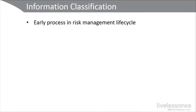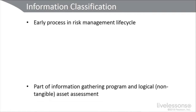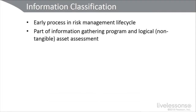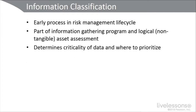In the early process of this lifecycle, we're going to make sure that we have information classification. We are classifying the data and the assets of the organization. It's part of our information gathering — that early phase, regardless of the lifecycle that you use, call it that first phase of planning and strategy. We're going to classify our objects: data assets, tangible and intangible. We want to make sure that we have the criticality of data down. Where in this organization is their critical data stored?